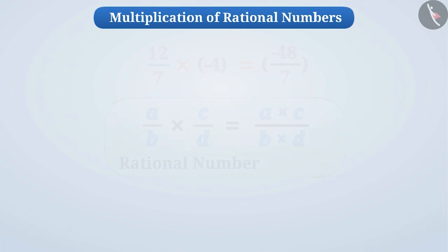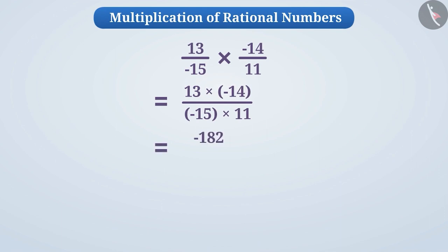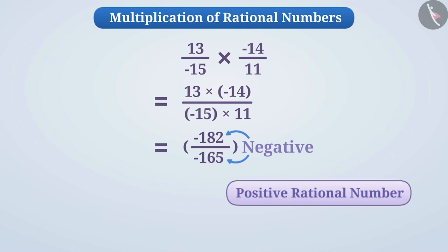Let us understand this with an example. Suppose we have to find the result of thirteen by minus fifteen into minus fourteen by eleven. For this, we will first multiply the numerators thirteen and minus fourteen to get minus one hundred and eighty-two. Then, we multiply the denominators minus fifteen and eleven to get minus one sixty-five. The result is the product of the numerators divided by the product of the denominators, that is, minus one eighty-two divided by minus one sixty-five. Since the numerator and denominator are both negative, it is a positive rational number. Hence, the result of this multiplication is one eighty-two by one sixty-five.